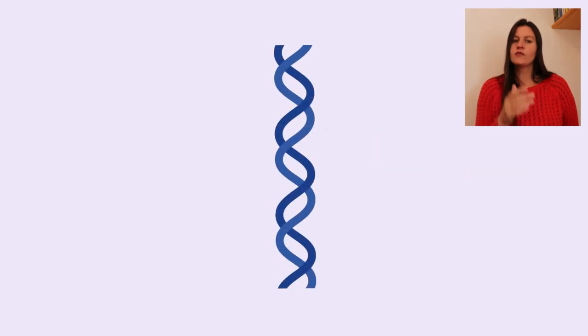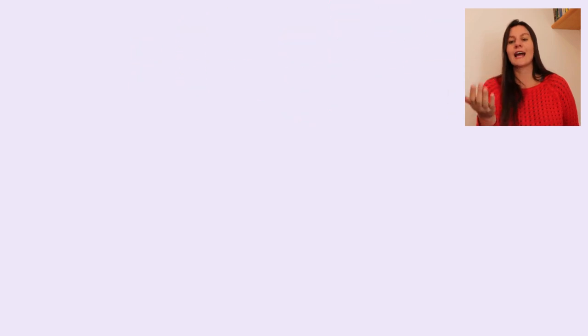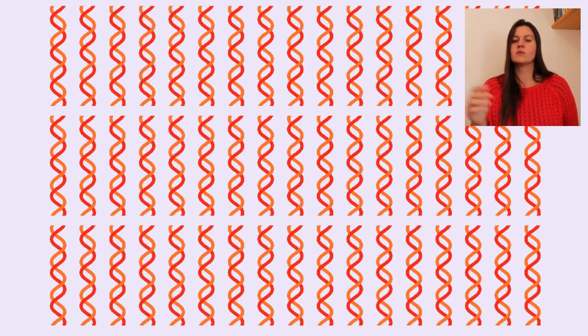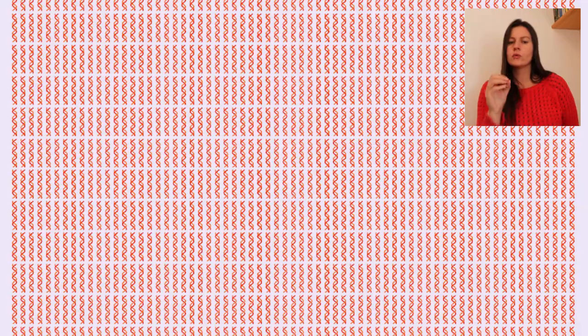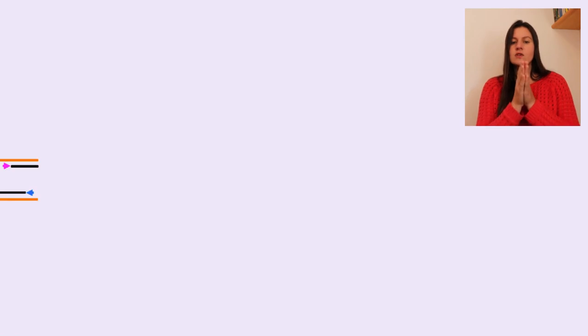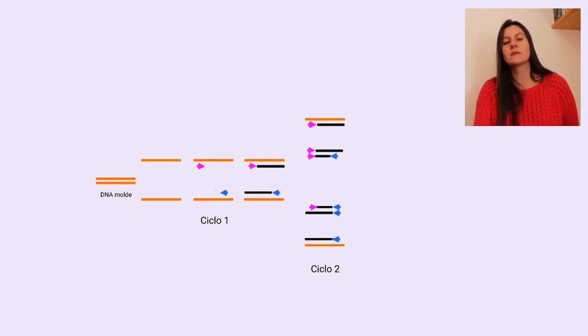Se a reação for eficiente, a região de interesse pode ser gerada em bilhões de cópias. Como há muitas cópias dos primers, muitos DNTPs, muitas moléculas de DNA polimerase flutuando ali na reação, o número de moléculas pode aproximadamente dobrar a cada rodada do ciclo. Isso acontece porque não é apenas o DNA original que é utilizado como molde em cada ciclo. Ao invés disso, o novo DNA feito em cada rodada serve também de molde nas próximas rodadas de síntese.